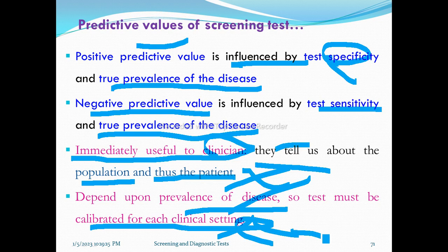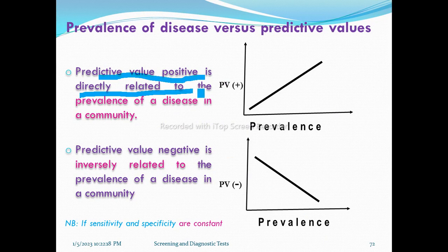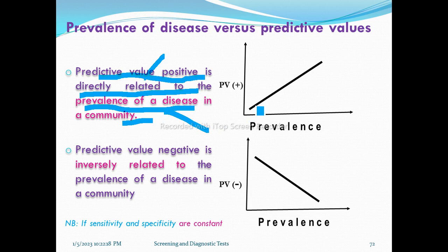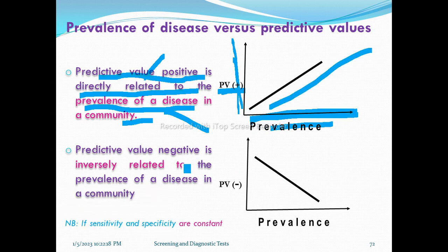Another important concept: positive predictive value is directly related to the prevalence of the disease in the community. Negative predictive value is inversely related to the prevalence of the disease.